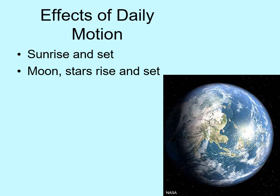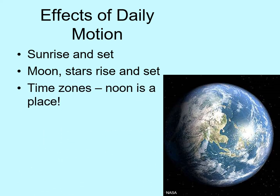Did you figure it out? If the sun appears to move to the west, then we must be spinning towards the east. One other effect of our daily spin is time zones.